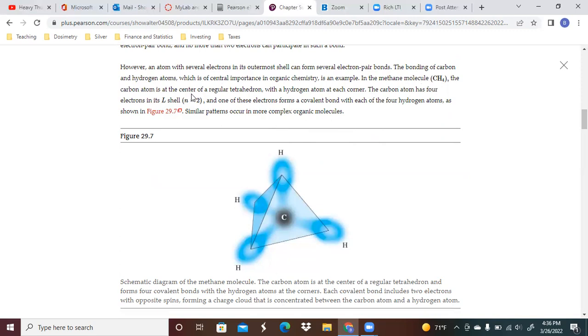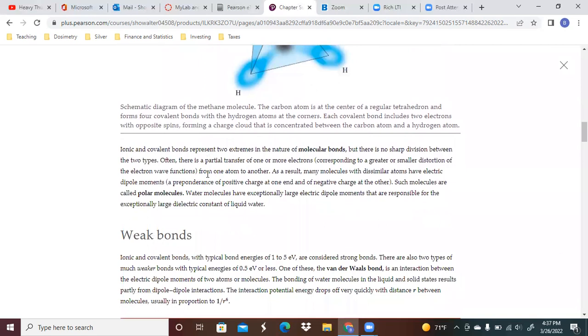In the methane molecule, the carbon atom is at the center of a regular tetrahedron with a hydrogen atom at each corner. The carbon atom has four electrons in its shell, and one of these electrons forms a covalent bond with each of the four hydrogen atoms as shown here. Similar patterns occur in more complex organic compounds.